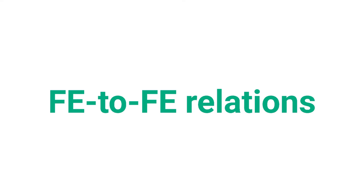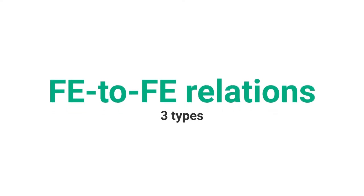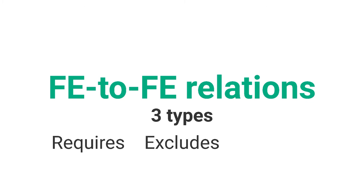In FrameNet, there are three types of frame element-to-frame element relations which capture special instantiation cases of core frame elements. They are: requires, excludes, and core set. Let's see how they work.